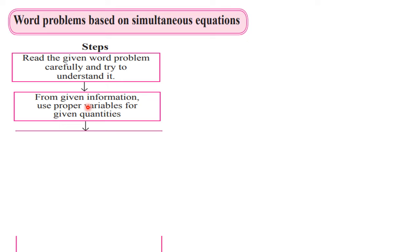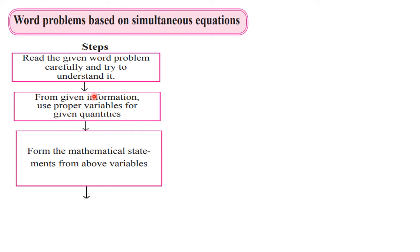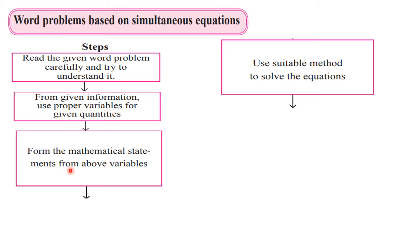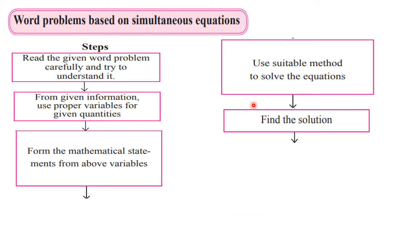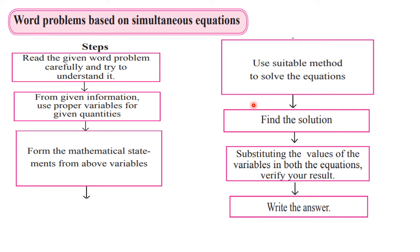We have to assign variable x to one quantity and y to the other quantity — you can take any other variables also. Then the third step is: by using those variables we have to form mathematical statements or equations and number them as 1 and 2. Then we use the elimination method to solve the equations as we have done in practice set 5.1, and then we write down the solution and the answer. Writing the final answer in words is compulsory here. So these are the steps — a flow chart to solve word problems based on simultaneous equations.